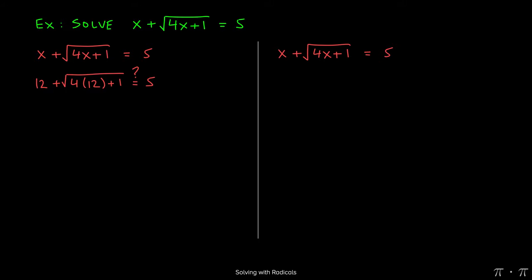So simplifying the left-hand side, 4 times 12 gives us 48. 48 plus 1 inside the radical gives us 49. Hopefully we'll remember that the square root of 49 is 7. And the left-hand side now simplifies to 12 plus 7, which is 19.